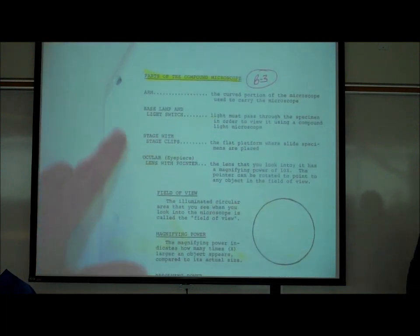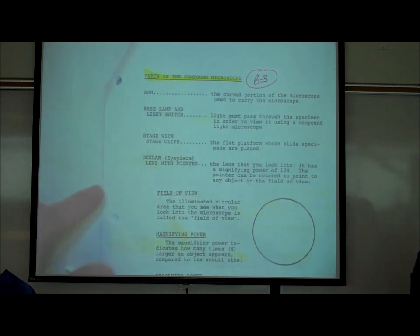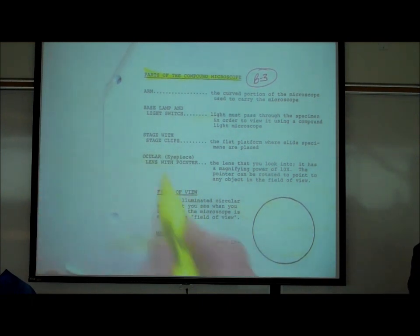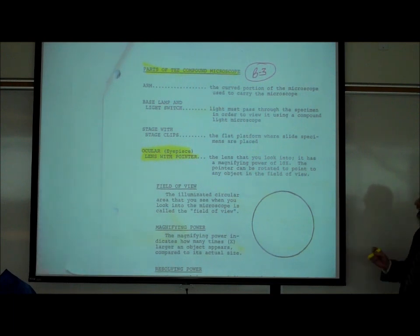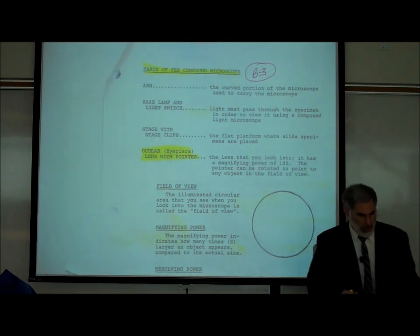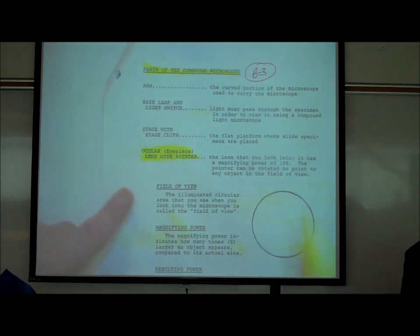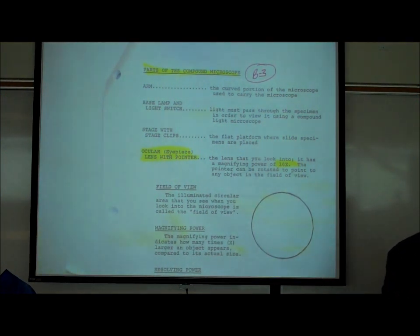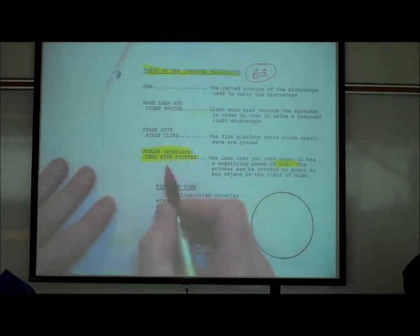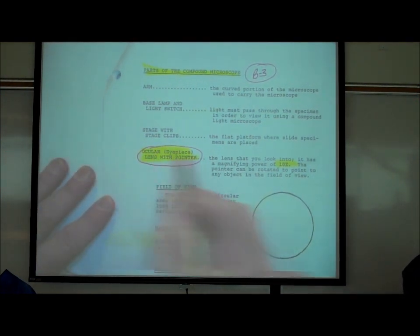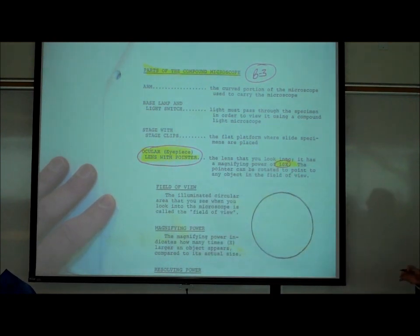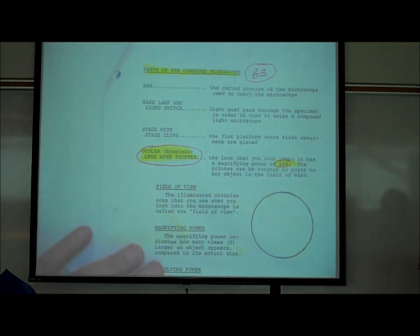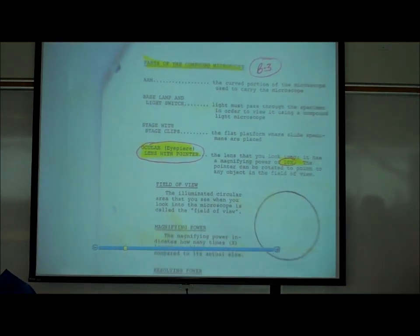We've mentioned the arm, the base, lamp, and the stage. The ocular or eyepiece lens has a magnifying power of 10x, meaning if you were using this lens alone, it would make whatever you're looking at appear 10 times bigger than it really is.